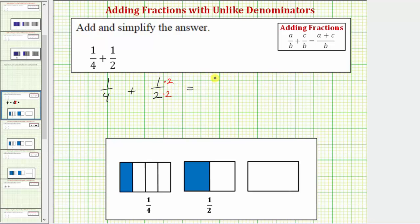So we'd have 1 fourth plus 2 fourths and now we have a common denominator. We can add the two fractions. The denominator stays the same and we add the numerators. One plus two is equal to three. The sum is 3 fourths.